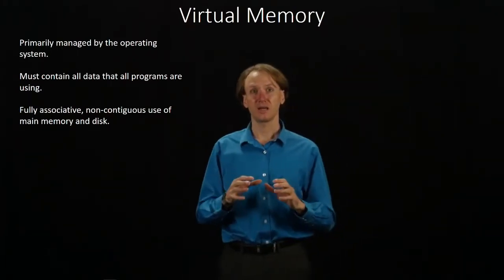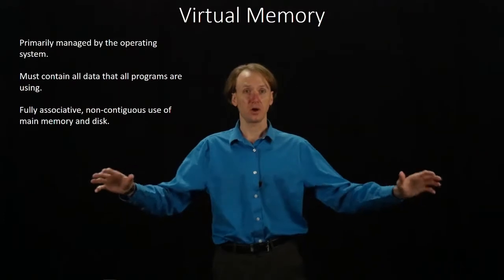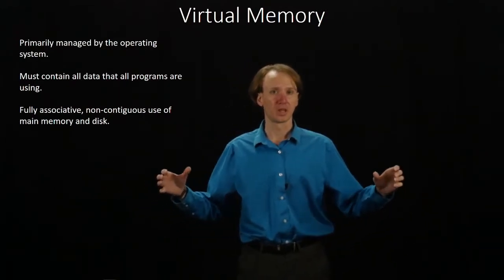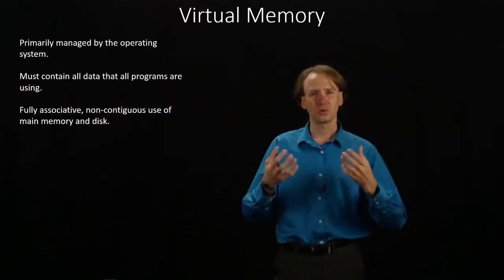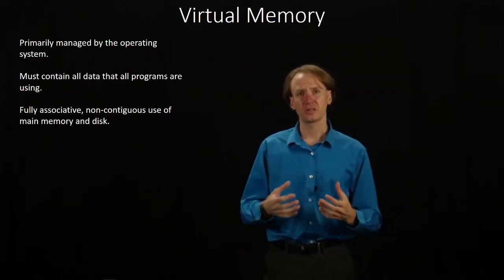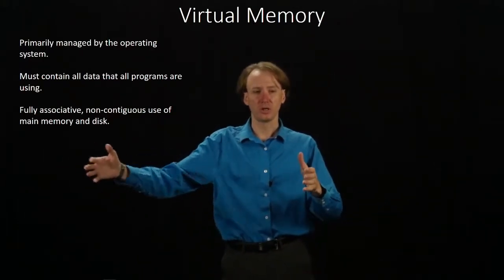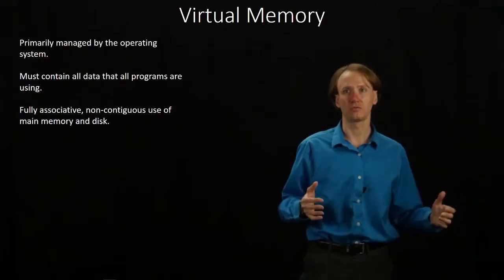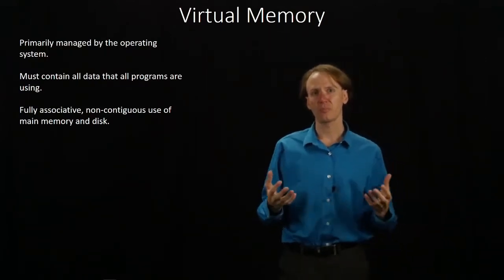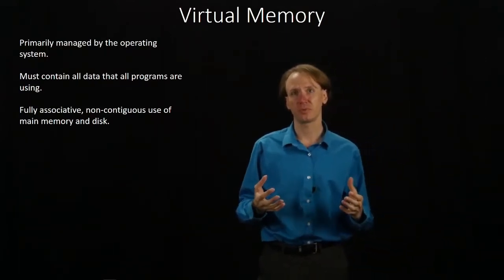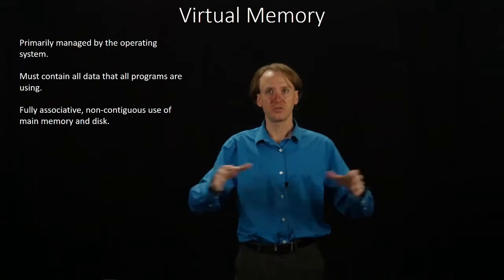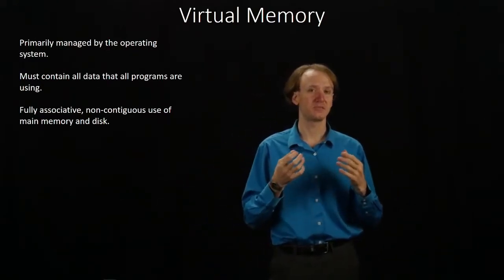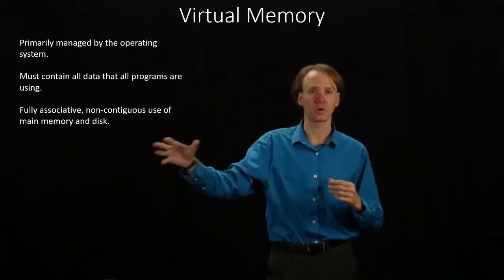Virtual memory has to contain all of the data that all of our programs are using at the moment. It's going to effectively consist of our main memory as well as an additional chunk from the hard drive. From our operating system's perspective, this is a fully associative memory — we can place pieces of data wherever we'd like to.